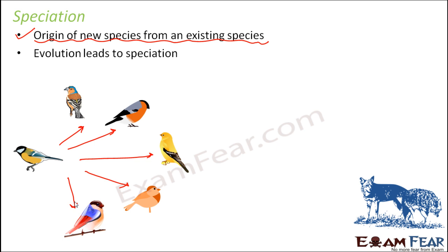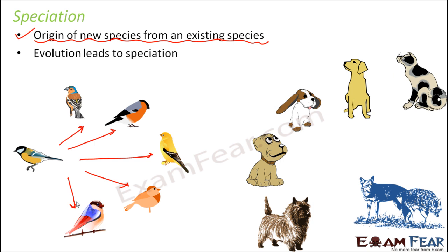Another example: today we get to see so many different varieties of dogs, and this is also a result of evolution. The dogs originally came from the grey wolves. What happened was that humans played a role there — many humans artificially selected them. Artificial breeding took place where they selected wolves with desirable traits and only kept the puppies with the most desirable traits.